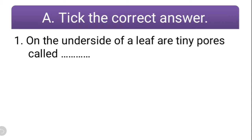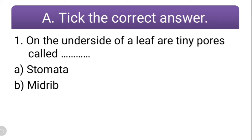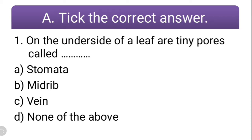The first question reads: on the underside of a leaf are the tiny pores called — options: stomata, midrib, vein, or none of the above. So what are the tiny pores on the underside of the leaf? Do you remember we had already discussed this in the lesson? The correct option is stomata. These are the tiny pores, and respiration happens with the help of stomata.